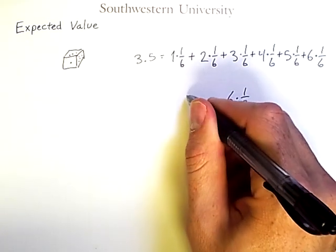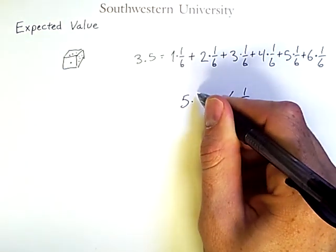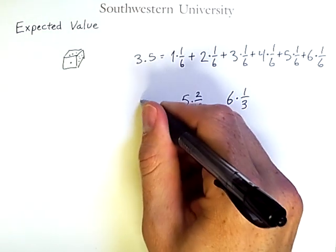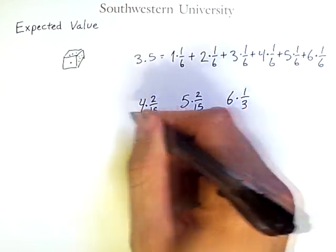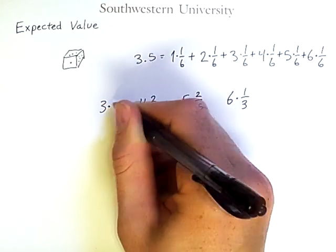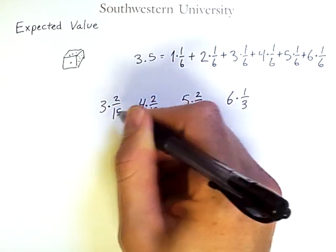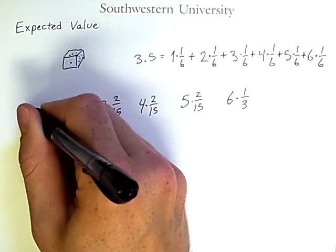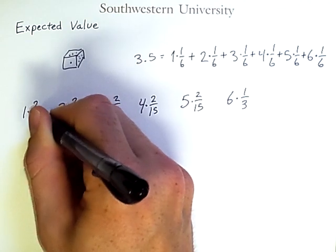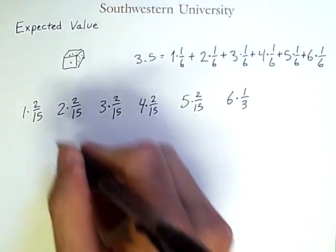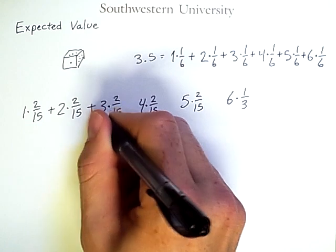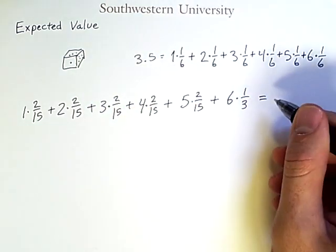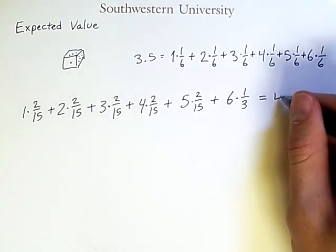Well, then I would have 5×2/15, and 4×2/15, and so on for all the other values. And once again, if I add these up, in this case, I'll find that the value is 4.